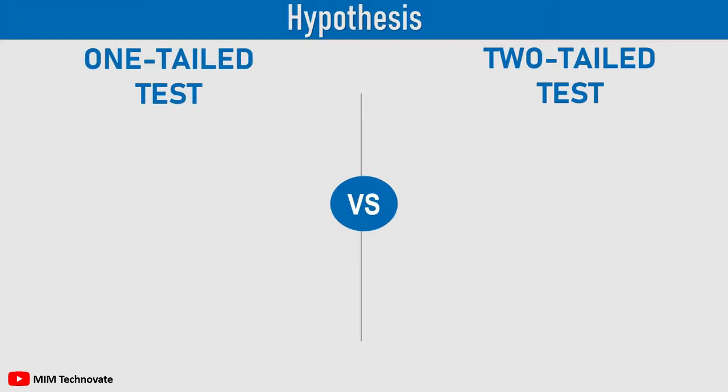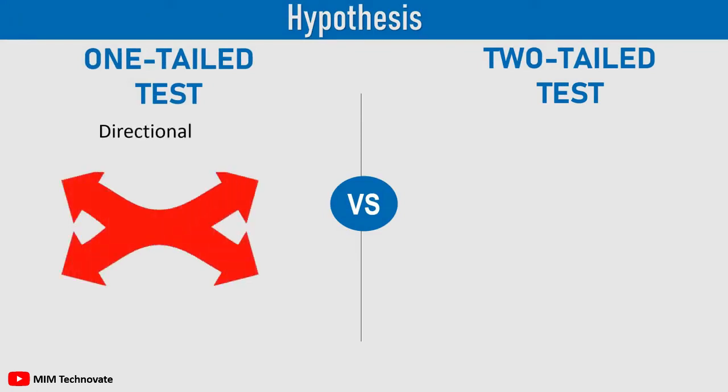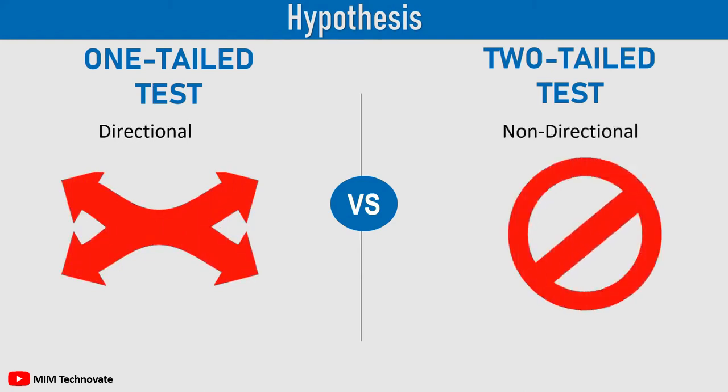In the one-tailed test, the alternative hypothesis is represented directionally, whereas the two-tailed test is a non-directional hypothesis test.